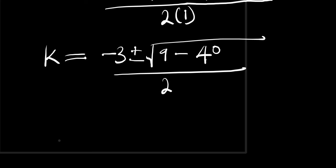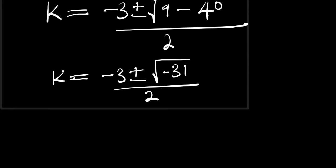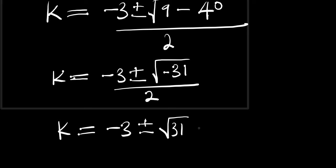So we have k equals negative 3 plus or minus the square root of 9 minus 40, which is the square root of negative 31, divided by 2. We can rewrite this as the square root of 31 times the square root of negative 1, divided by 2.